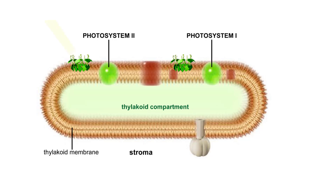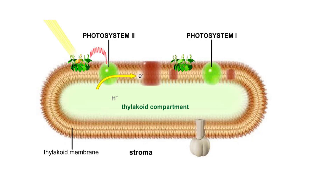Photosynthesis begins when photon energy is captured by light harvesting complexes and passed to Photosystem II. The photon energy causes Photosystem II to lose electrons. It replaces them by pulling electrons from water molecules, which then split into oxygen and hydrogen ions. Oxygen diffuses out of the chloroplast, but hydrogen ions are left behind in the thylakoid compartment.